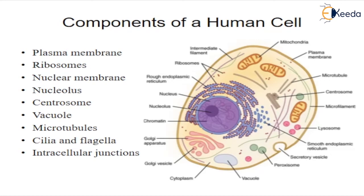Nuclear membrane. The nuclear membrane is a double-layered structure surrounding the nucleus containing many nuclear pores. These pores allow different materials to move in or out of the nucleus. Nucleolus. The nucleolus is present within the nucleus; some cells have more than one nucleolus. It is the assembly plant for ribosomes. Ribosomal proteins are made in the cytoplasm and transported back into the nucleus.